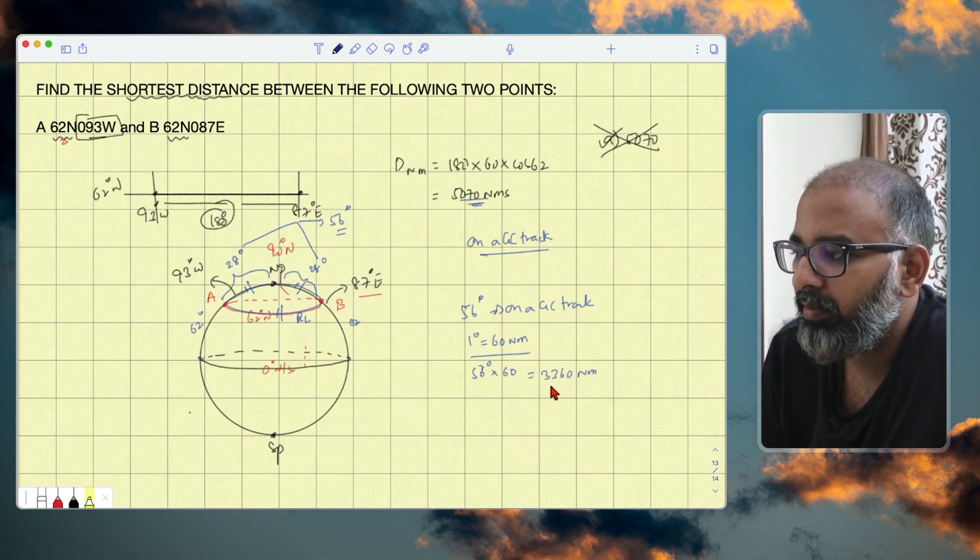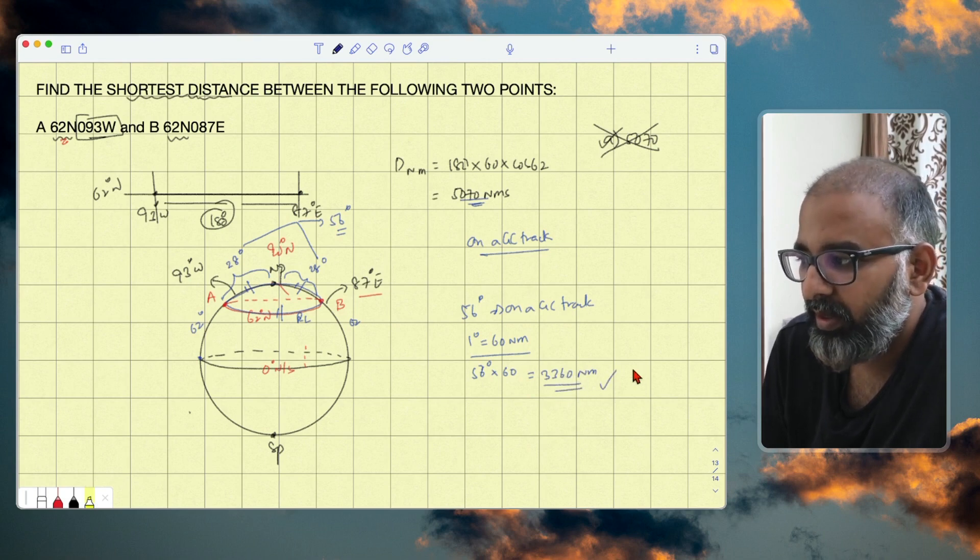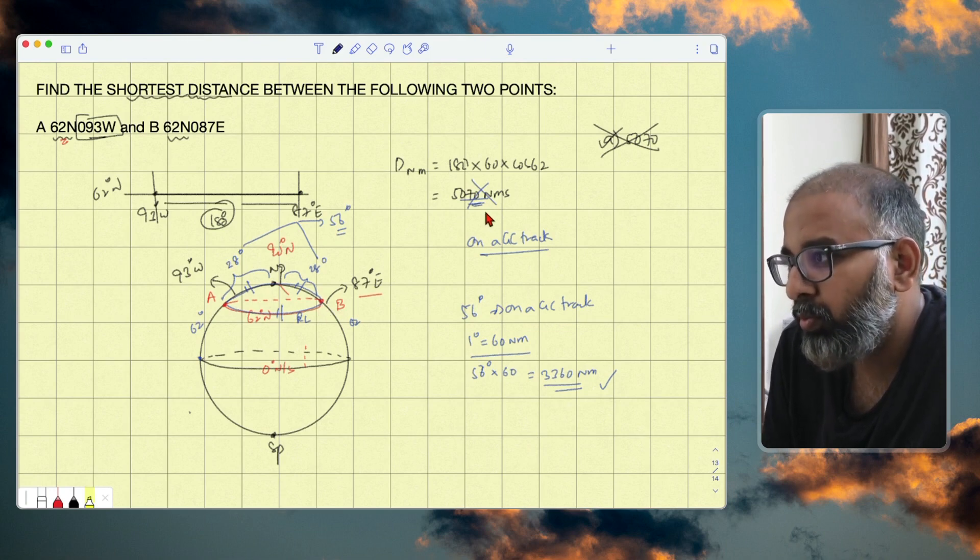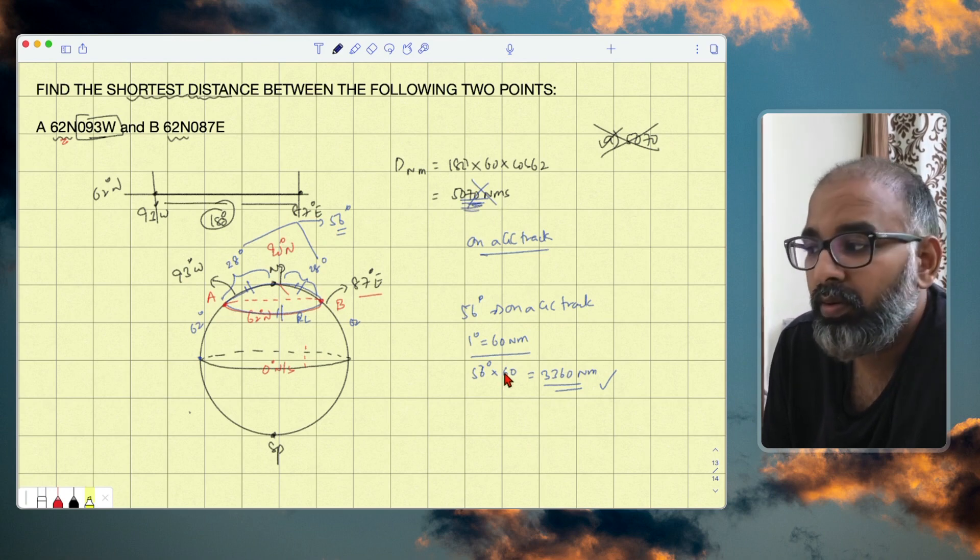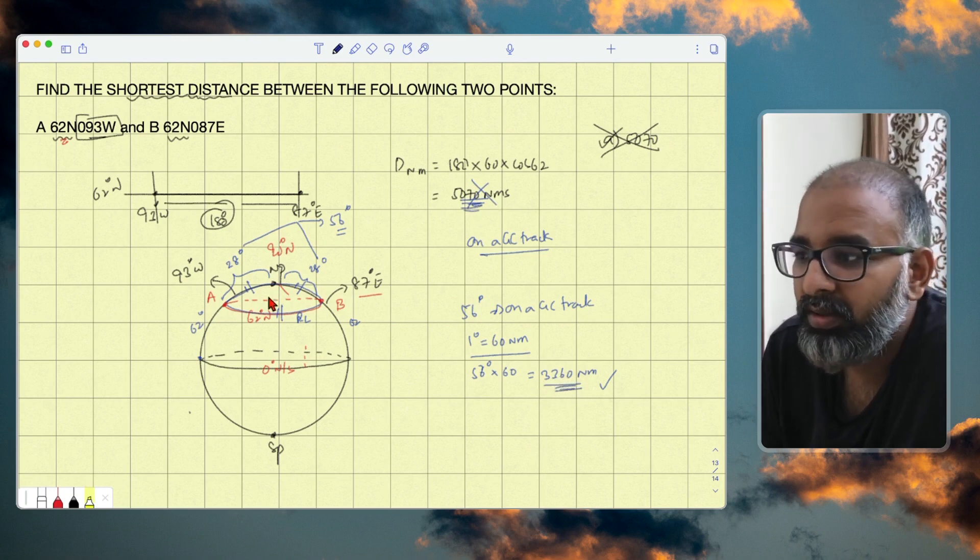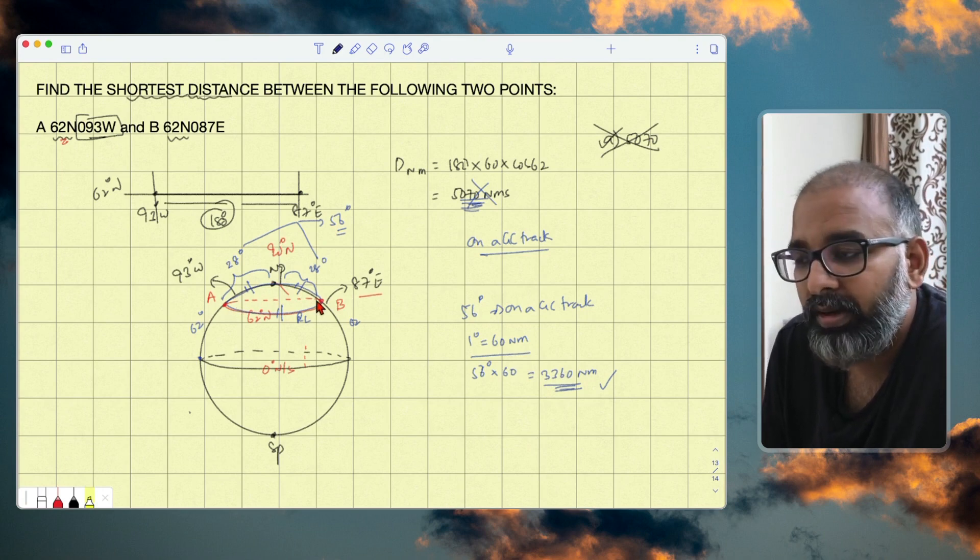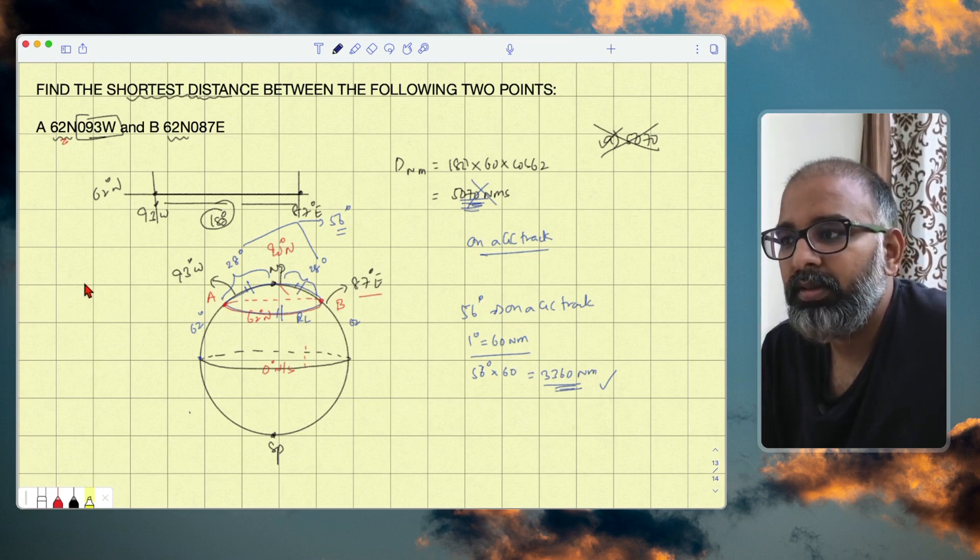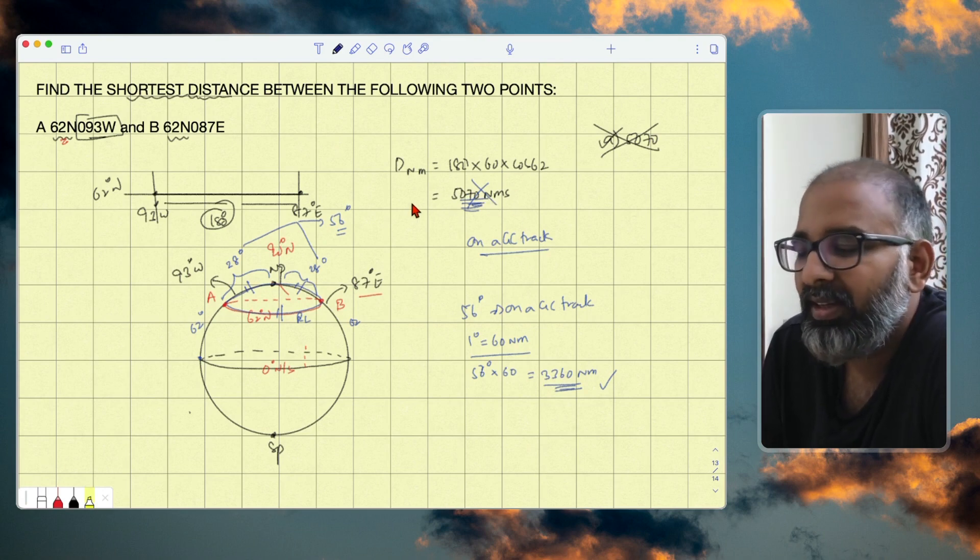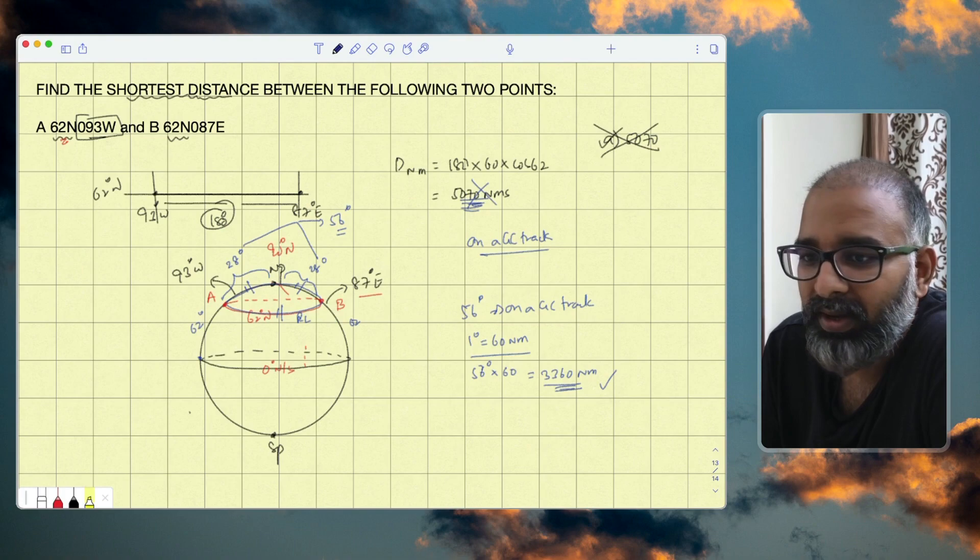If you are traveling along the parallel, you are traveling around 5070 nautical miles, but you can cut it down to only 3360 nautical miles if you follow a great circle track. Hope this video helps for your exams, and please don't mark the wrong answer as soon as you see this in your exams. Good luck!